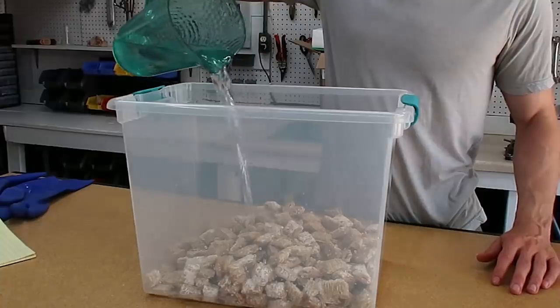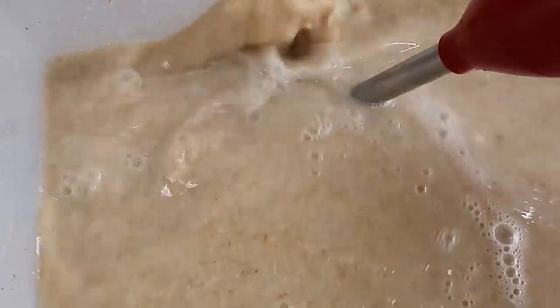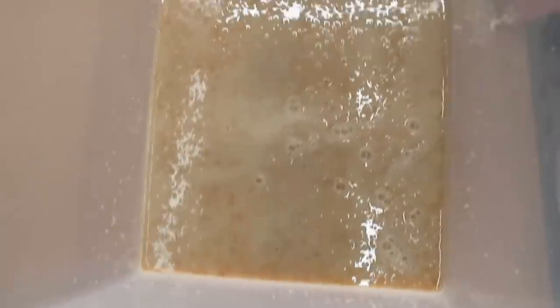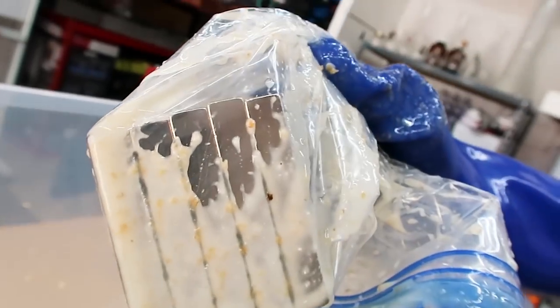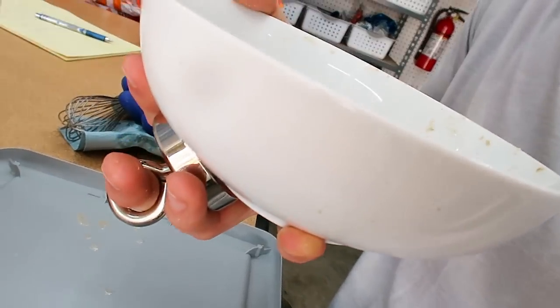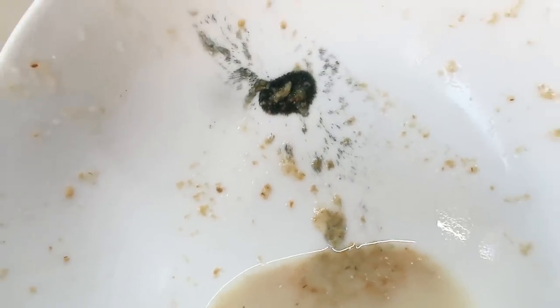If you take fortified cereal, add water, and blend it up, you end up with this carbohydrate goopy mess. Now if you take a rare earth metal magnet and hold it next to this mixture, you can actually see there's real iron in the cereal.